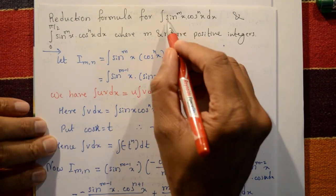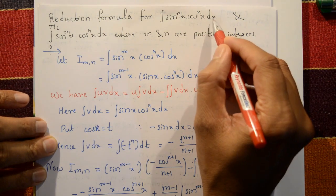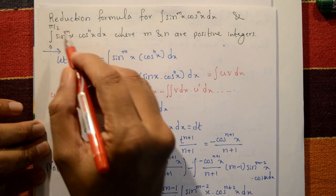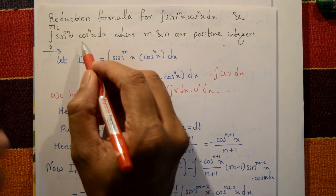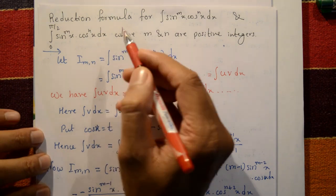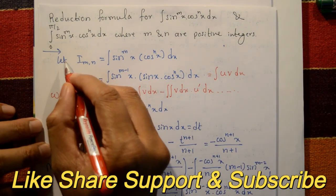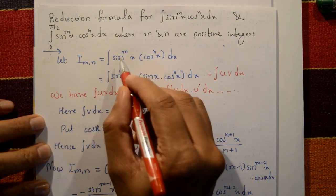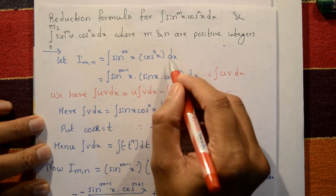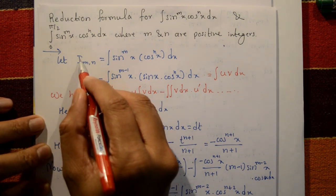We derive the reduction formula for the integration of sin^m(x)·cos^n(x) dx, and for the definite integral from 0 to π/2 of sin^m(x)·cos^n(x) dx, where m and n are positive integers. Let the integration of sin^m(x)·cos^n(x) dx be equal to I_mn.